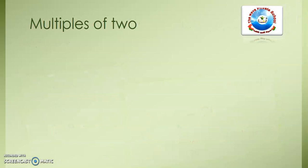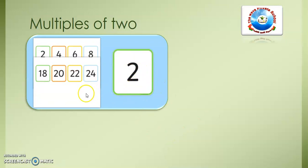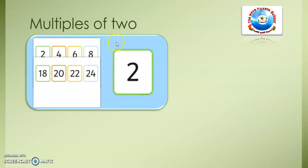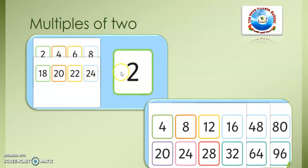Now, multiples of 2: you can see that each number in the multiples of 2 ends in 2, 4, 6, or 8. It means that every multiple of 2 will end with one of these digits: 0, 2, 4, 6, or 8. For example, 18 ends in 8 so it is a multiple of 2. 20 ends in 0, so it is a multiple of 2. 22 ends in 2, so it is a multiple of 2.